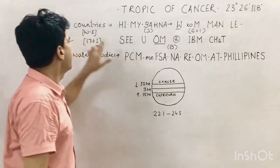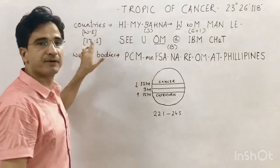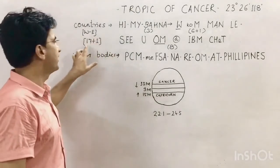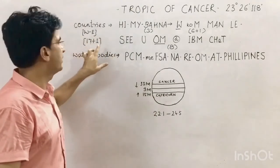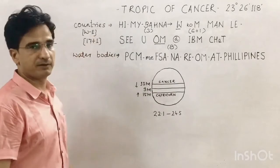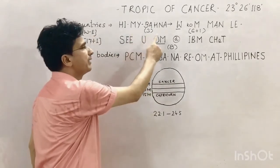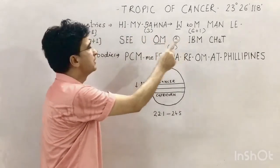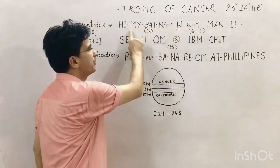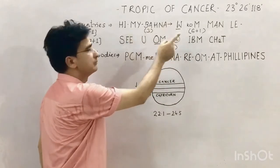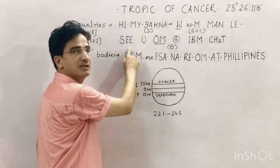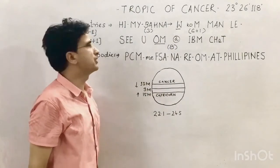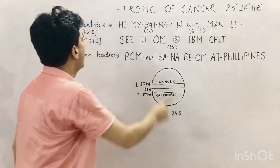Now we discuss the countries. The trick goes from west to east. There are 17 countries and one disputed territory. The trick for North America to Africa is 'Hi My Behna W Co M Marley,' and for Asia the trick is 'S U OM at IBM CHET.'